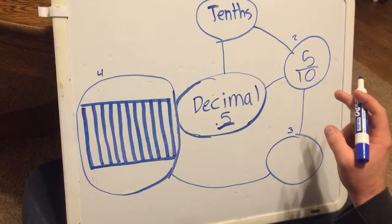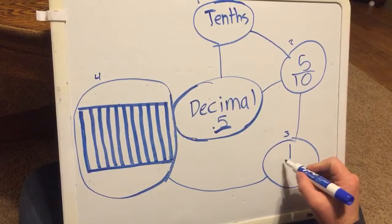When I look at 5 over 10, I realize that 5 is half of 10. This helps me understand that I can simplify this fraction as 1 half.